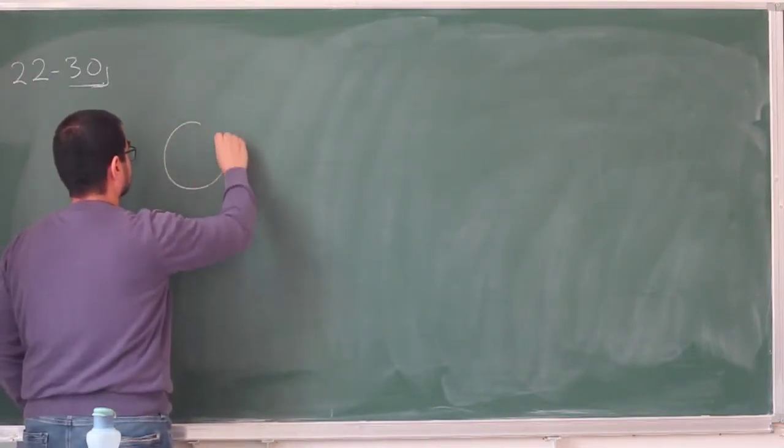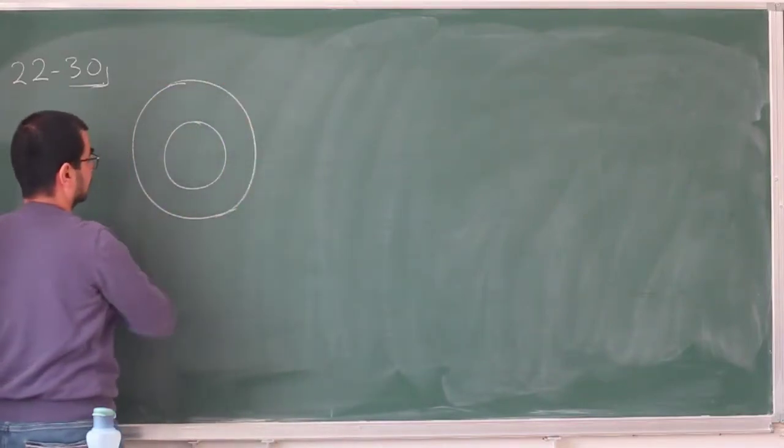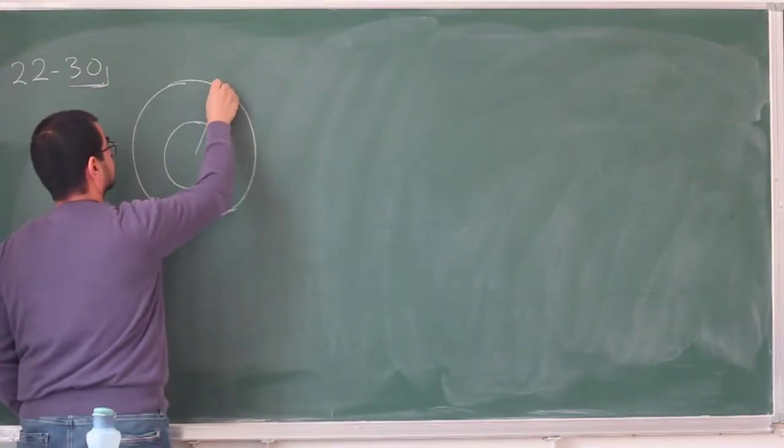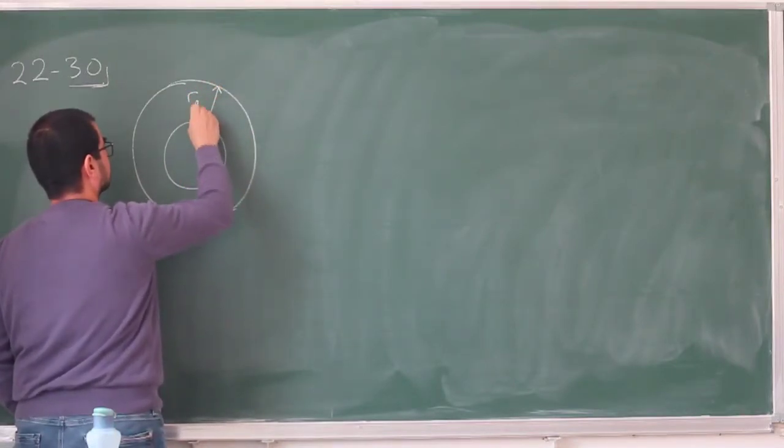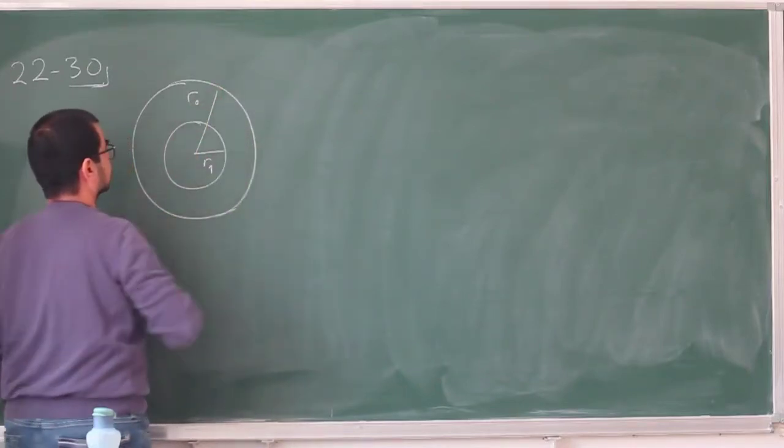Now here we have a sphere with a spherical cavity, and the outer radius of this thick spherical shell is given to be R0, the inner radius is R1.